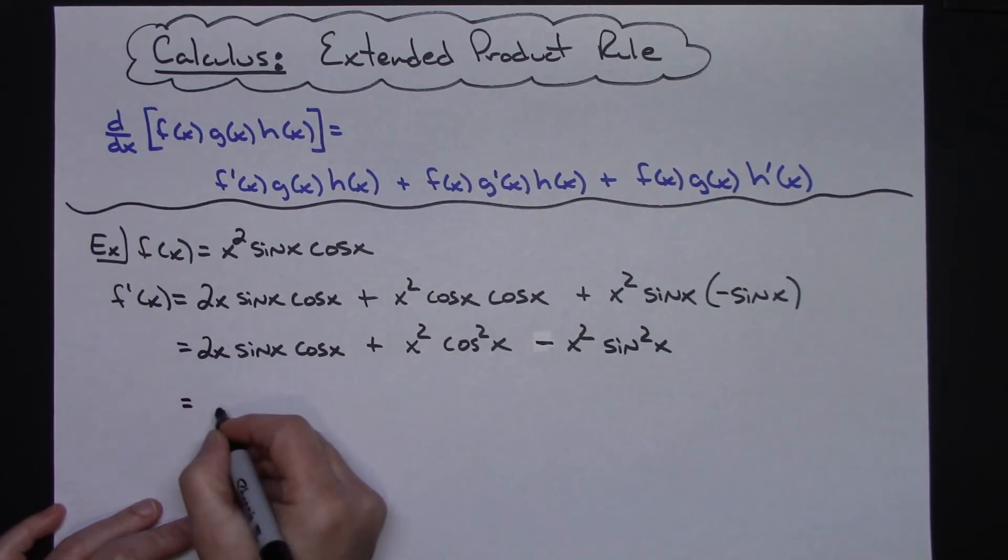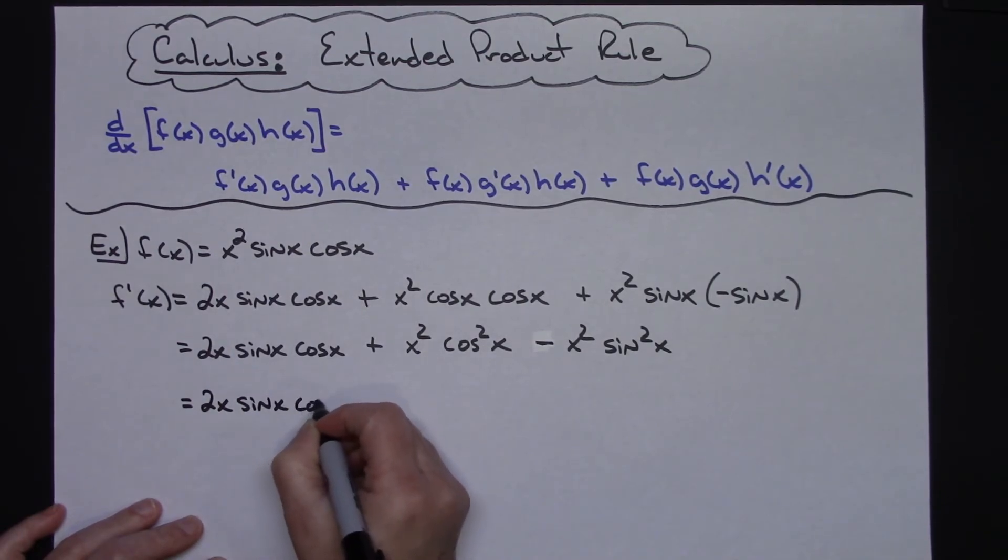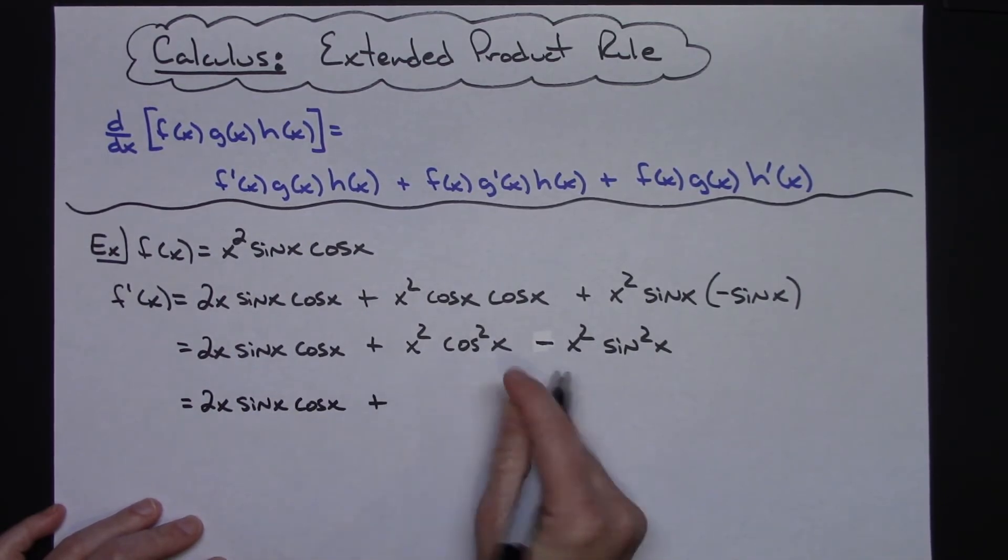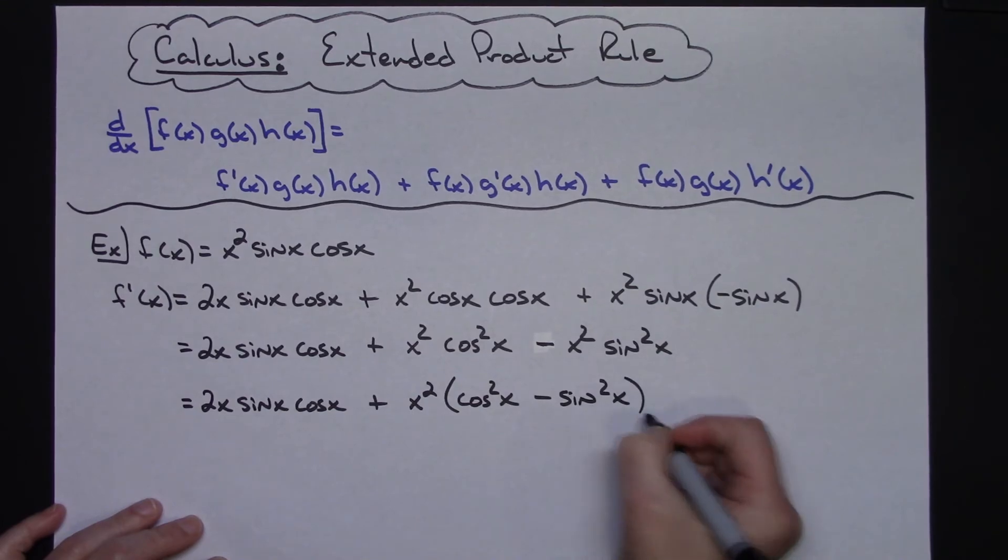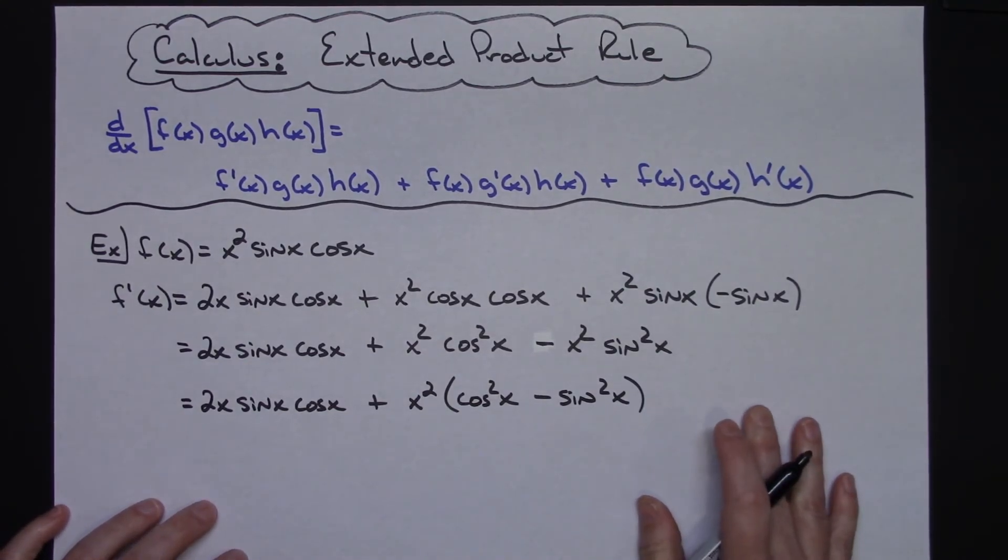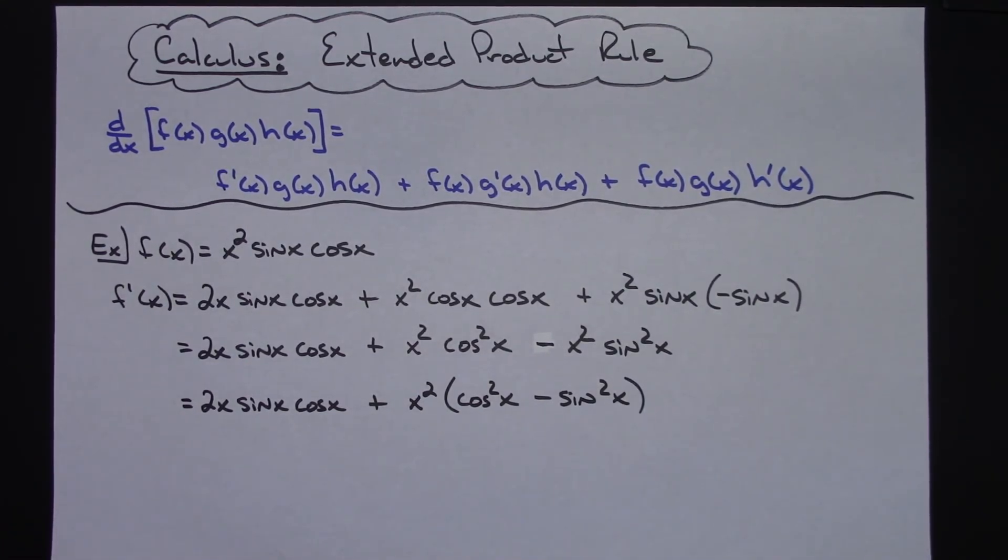I would probably leave my first term alone right here: 2x sin x cos x. And then out of these two terms I would pull out an x² and then I would leave cos² x - sin² x.